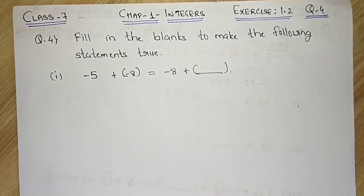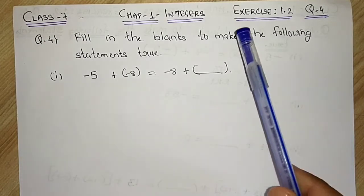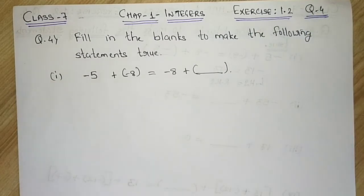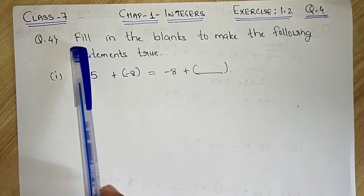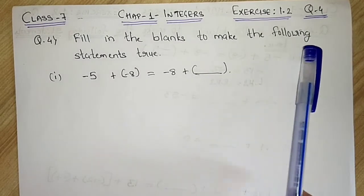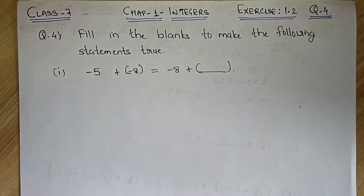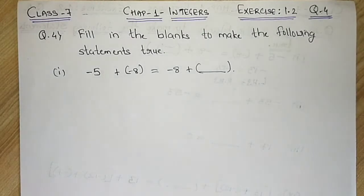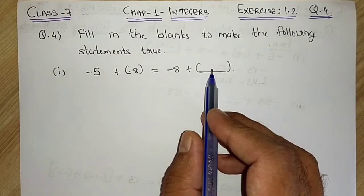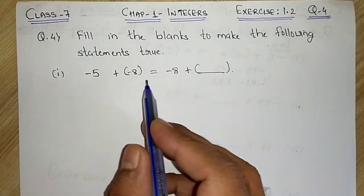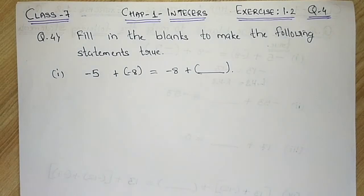Hello students, welcome back to a new lecture of Class 7 Chapter 1 Integers. We are solving Exercise 1.2, Question number 4. The question says: fill in the blanks to make the following statements true. They have given us 5 parts — 5 blanks in statement form — and we have to fill the blanks to make LHS equal to RHS.